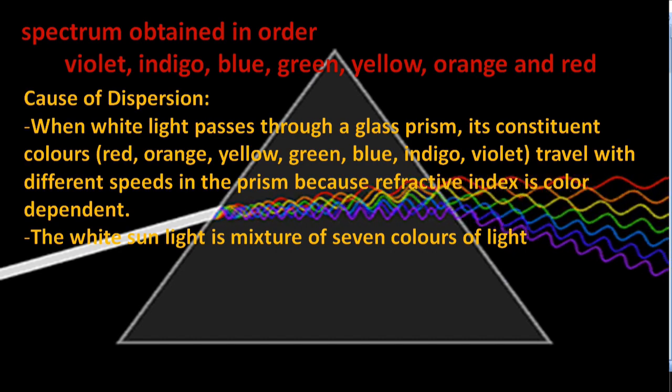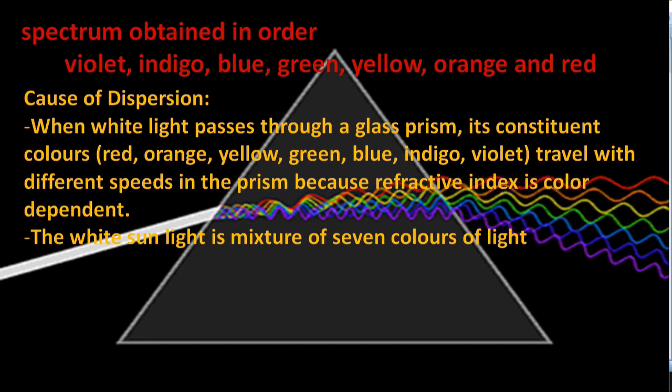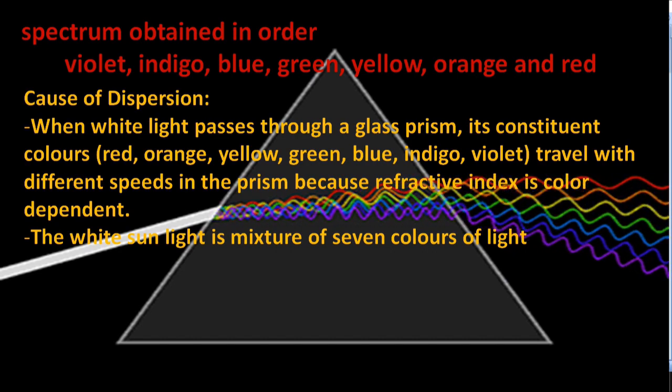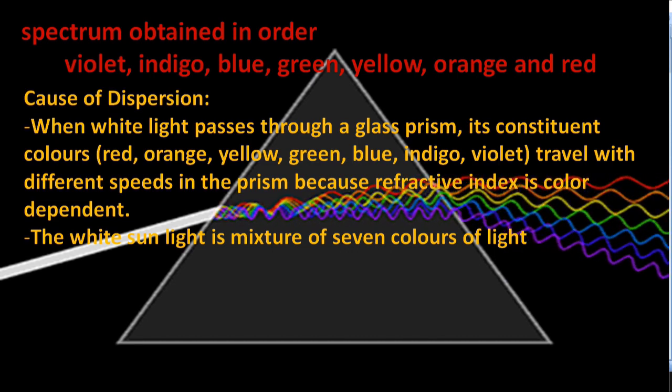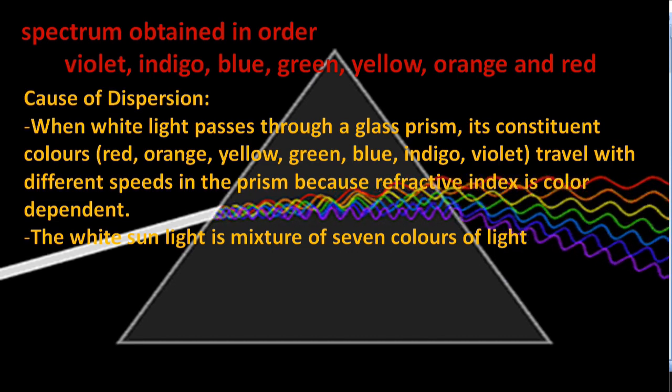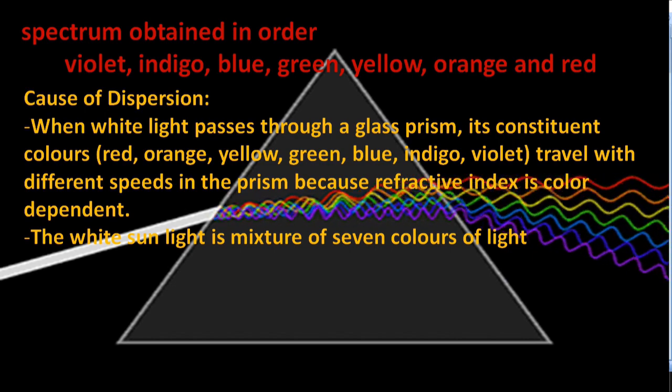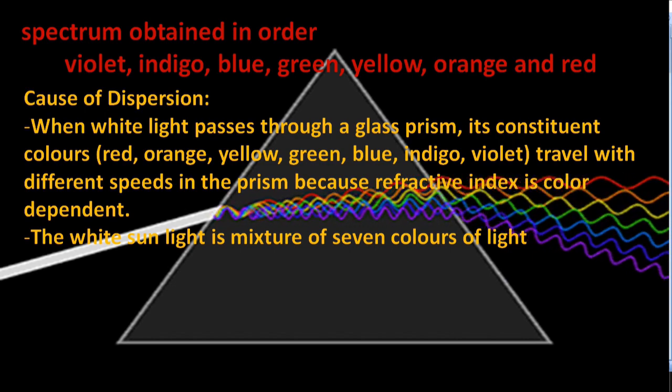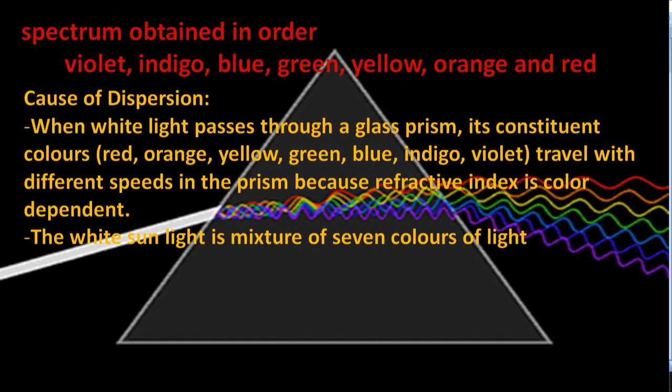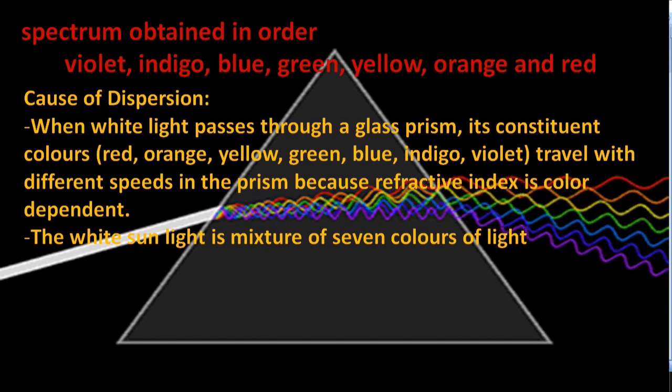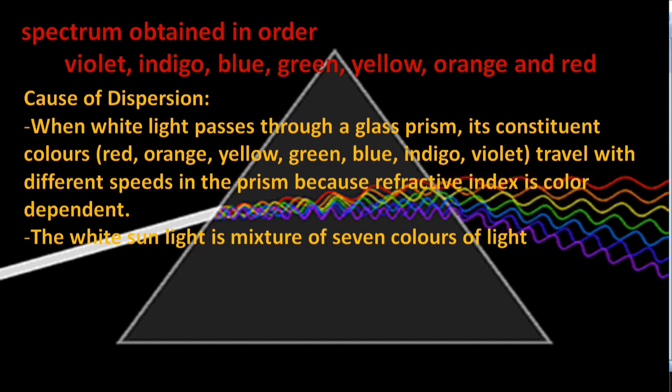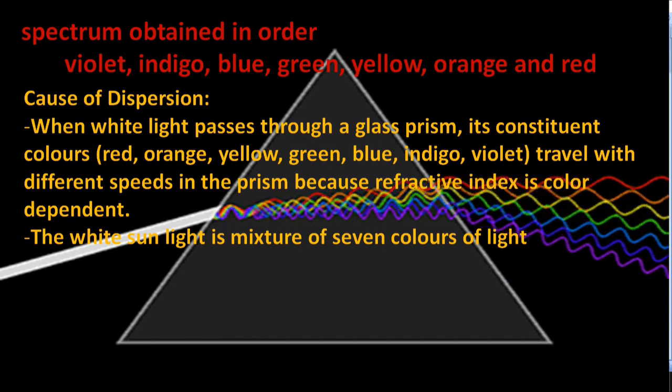Causes of dispersion. When white light passes through a glass prism, its constituent colors - red, orange, yellow, green, blue, indigo, violet - travel with different speeds in the prism because refractive index is color dependent. The white sunlight is a mixture of seven colors of light.